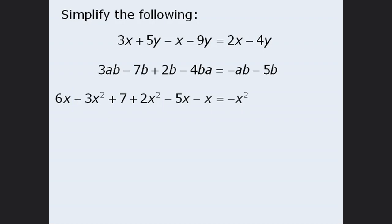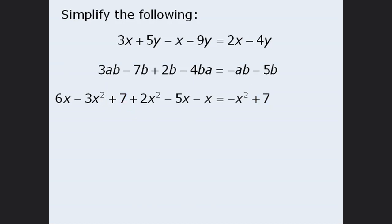Next we will collect the x terms. We have 6x minus 5x which equals 1x, and then we subtract 1x, which leaves us with 0 x's — in other words the x terms cancel out completely. Finally we have the constant plus 7, and since there are no other constants to combine with it, we leave it as plus 7. So the expression simplifies to be negative x squared plus 7.